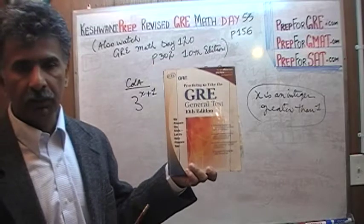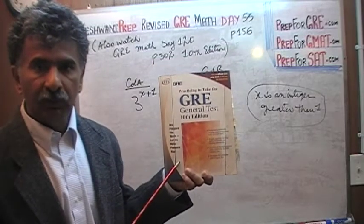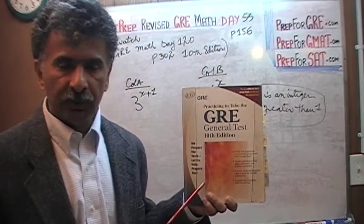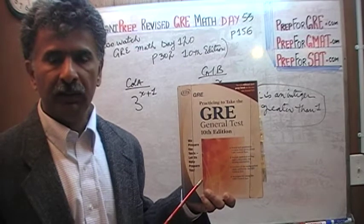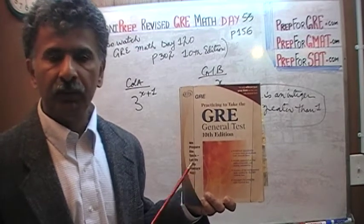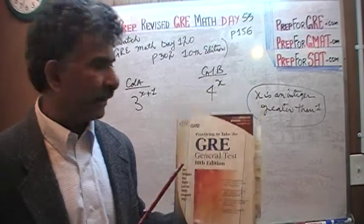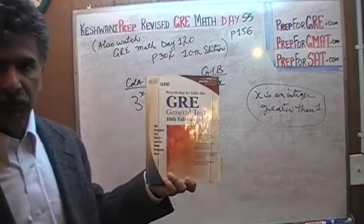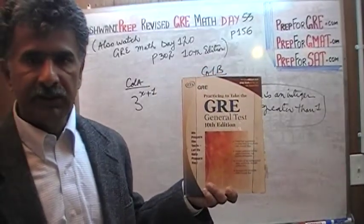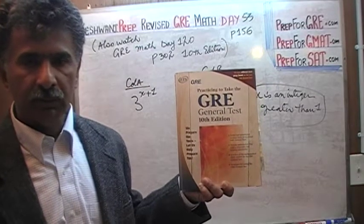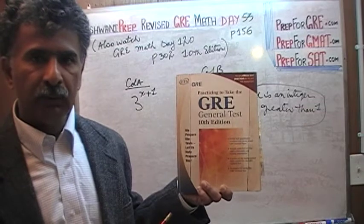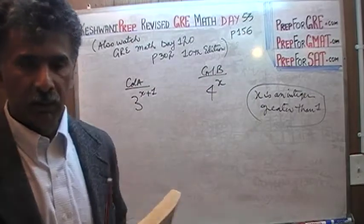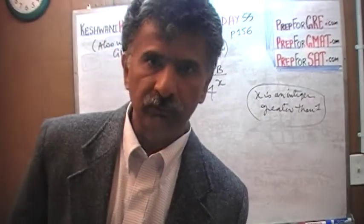In this book — Practicing to Take the GRE General Test, 10th Edition — there are seven exams based on the old format. The quantitative comparison questions have not been changed or removed. If you want more practice on these questions, acquire this book. It has seven exams, each with 30 quantitative comparison questions, giving 210 questions total. I've put together videos solving every single one of those 210 problems — just go to my channel and search for quantitative comparison questions for the GRE.